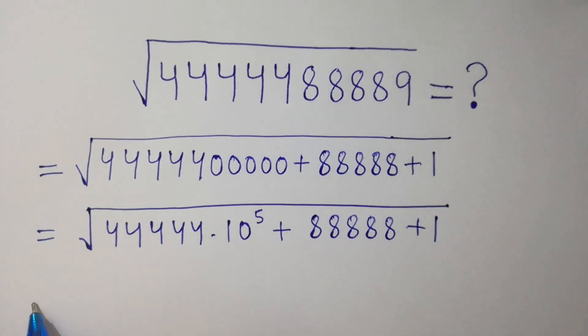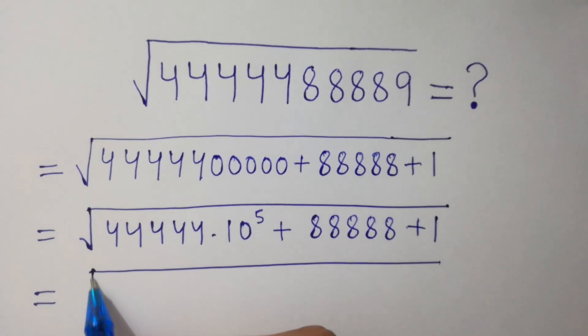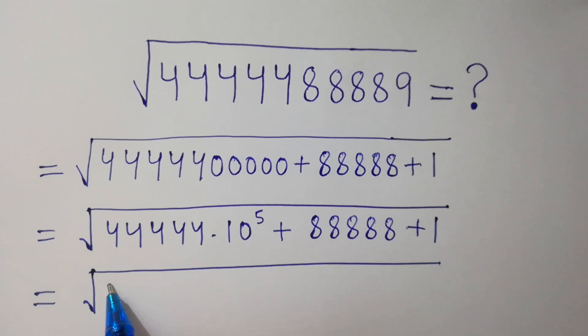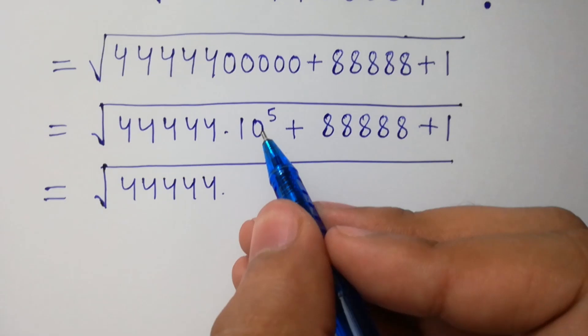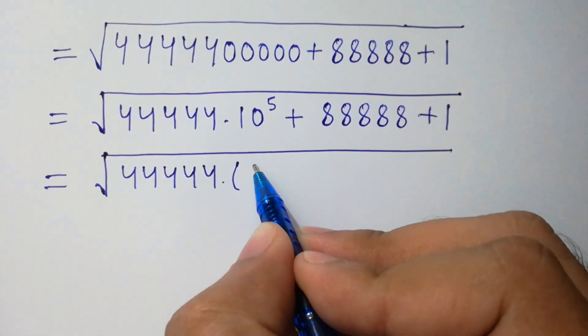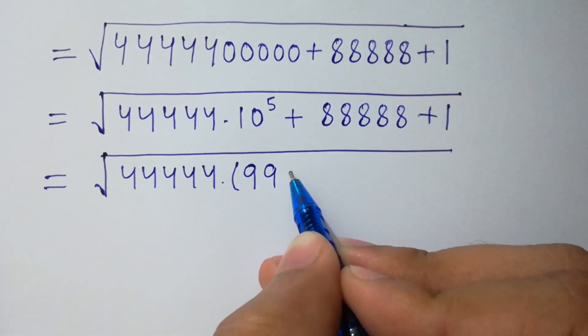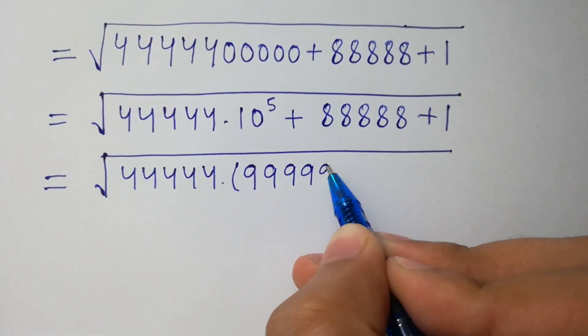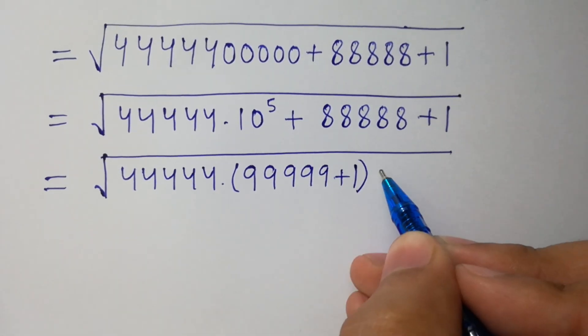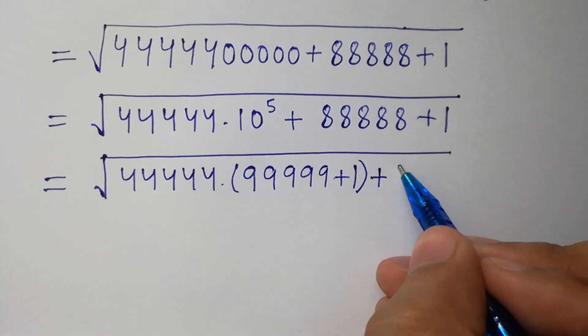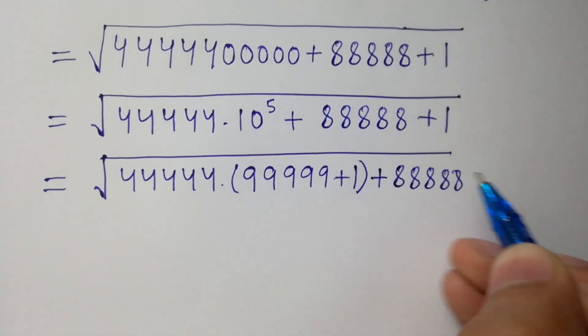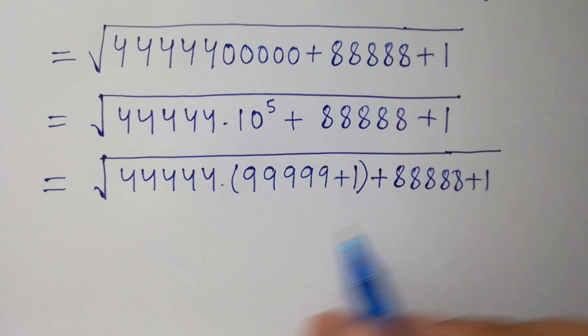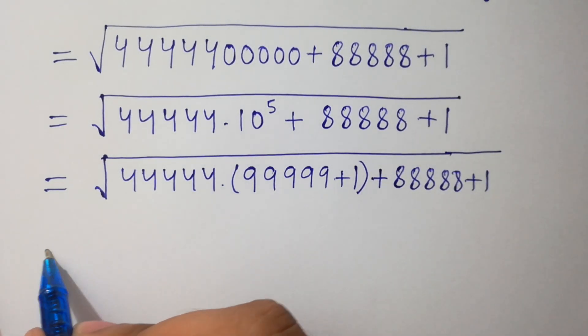Next step here, we can write 5 times 4, one two three four five, and 10 to the power 5, one two three four five, and 10 to the power 5 as it is, one two three four five, plus 1. Clear.